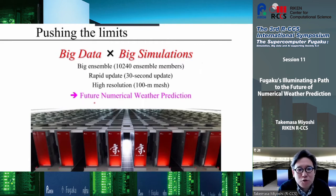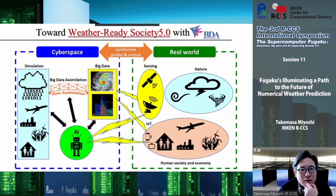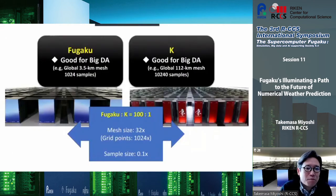What we explored using the K computer was to pioneer the future of numerical weather prediction by running orders-of-magnitude bigger computations combining big data with big simulations. Now we are thinking about the next step: incorporating AI. We have new sensors to observe the real world, get data in cyberspace, combine it through big data assimilation, and now AI can help many parts. We also have human society and the economy affected by nature, so we try to synchronize in a broader sense between cyberspace and the real world.